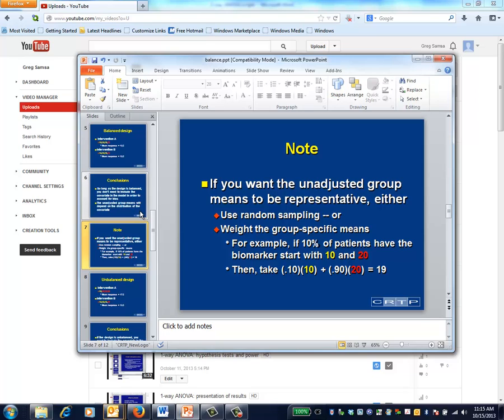In that case, oversampling the patients with the biomarker assures that you'll have sufficient numbers of those patients, whereas the re-weighting allows you to describe how the unadjusted results would look in the population as a whole.